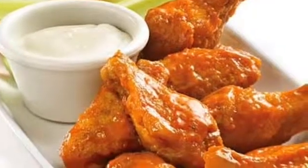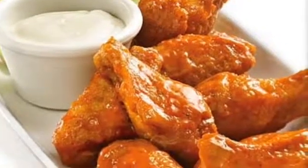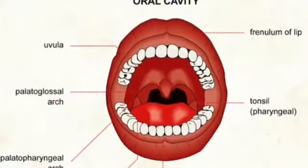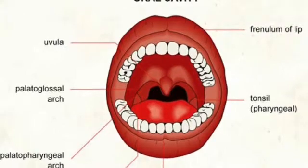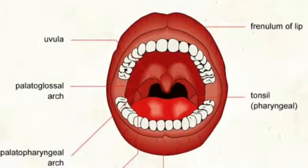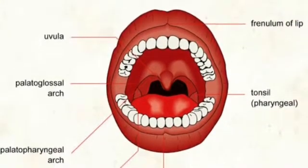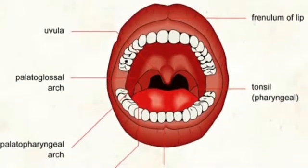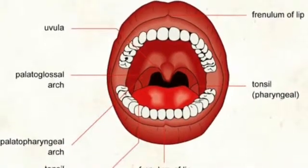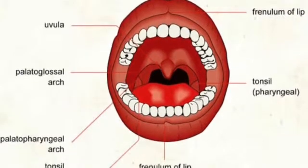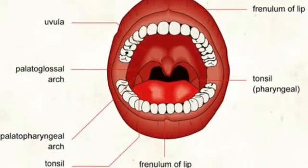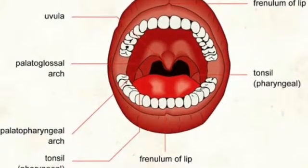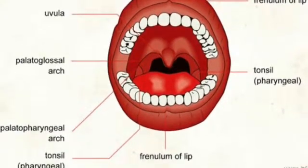Chicken digestion. The oral cavity, better known as the mouth, is the beginning of the digestive system. It contains the salivary glands, tongue, and teeth.